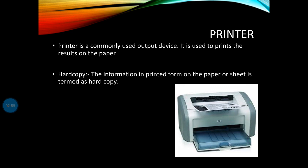जो भी documents हम लोग computer पर बनाते हैं उसको ये print करने के काम में आता है — whatever documents we create on the computer, the printer is used to print them. It prints the results on paper. The information in printed form on paper is termed as a hard copy.